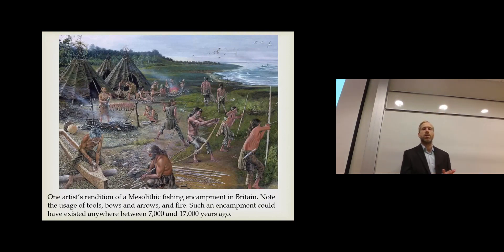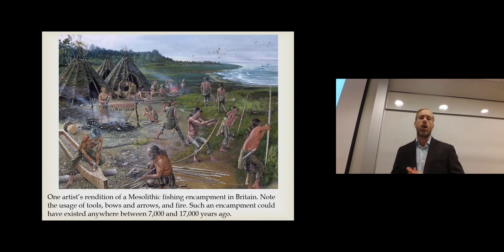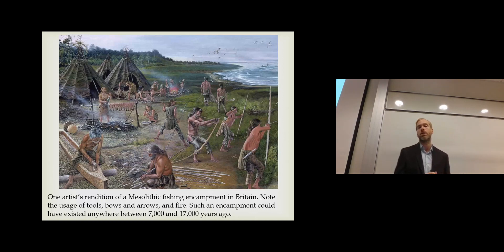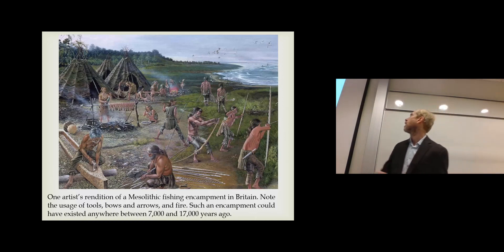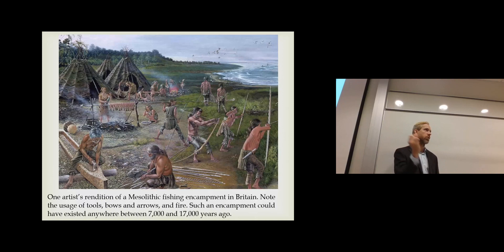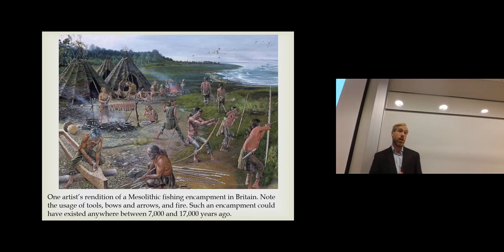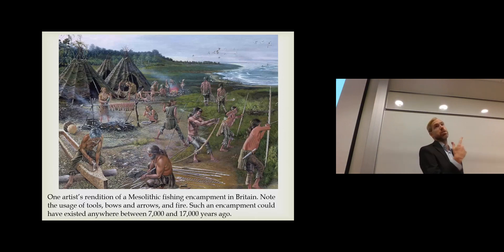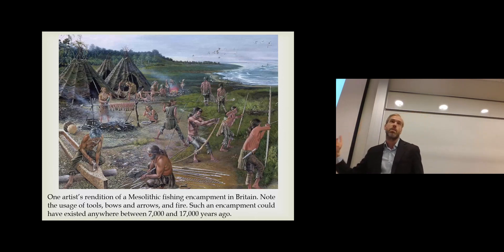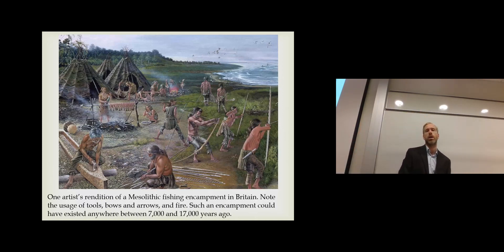Here's an artist's rendition of a Mesolithic fishing encampment in Britain, showing the usage of tools, bows and arrows, and fire. Such an encampment could have existed anywhere between 7,000 and 17,000 years ago. Rudimentary dwellings close to waterways — that's what people did in the past. We still do that today: think of all the towns and cities built on coastlines or rivers. That was quite deliberate, something people have been doing for a very long time.